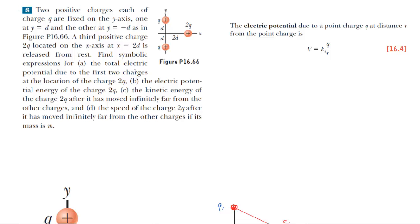In part A of the question, we are asked to find a symbolic expression for the total electric potential due to the first two charges at the location of the charge marked 2Q. The electric potential due to a single point charge is given by the Coulomb's Law constant multiplied by the charge divided by the distance to the location of interest.